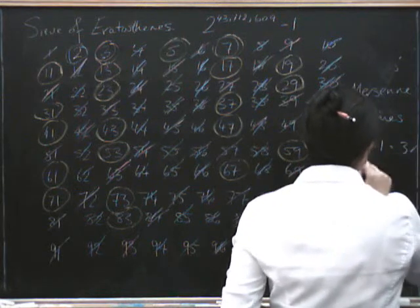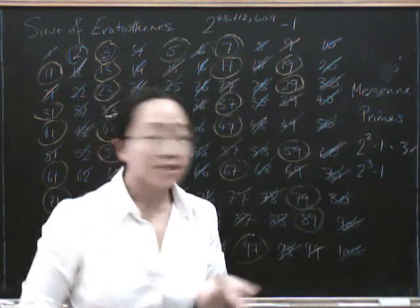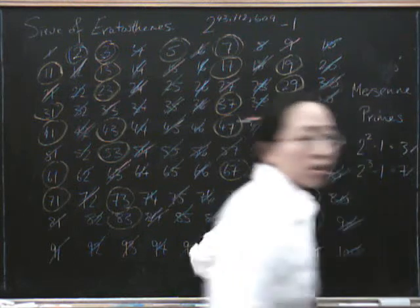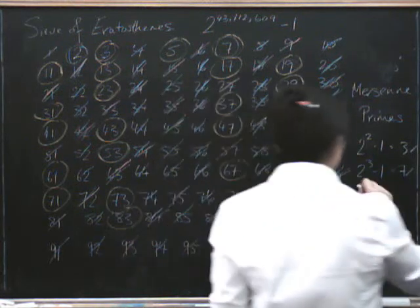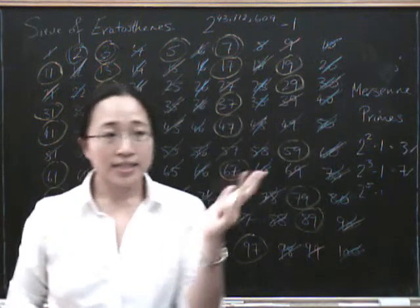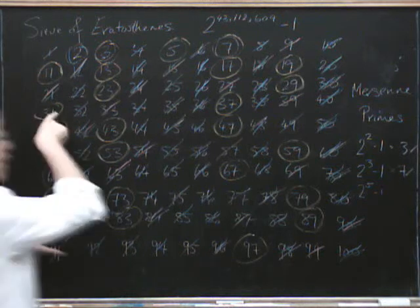So 2 to the power of 2 take away 1 is 3, which is prime. 2 to the power of 3 take away 1, well 2 times 2 times 2 is 8, if we take away 1 we'll get 7, which is prime. What about 2 to the power of 5 take away 1? 2, 4, 8, 16, 32. If we take away 1 we'll get 31, and that's prime.